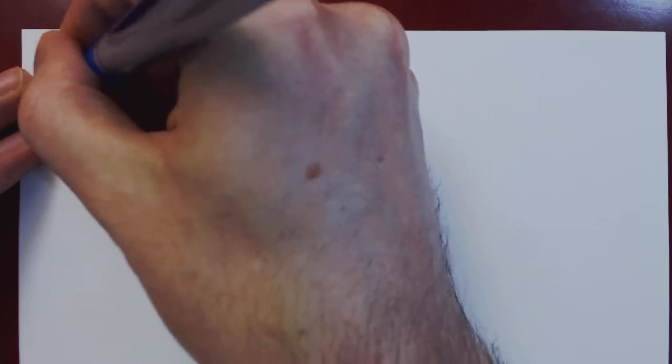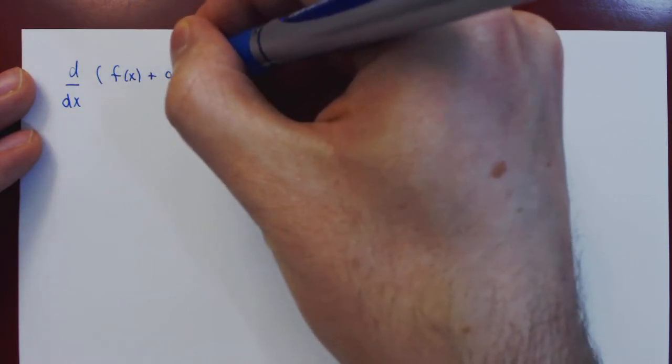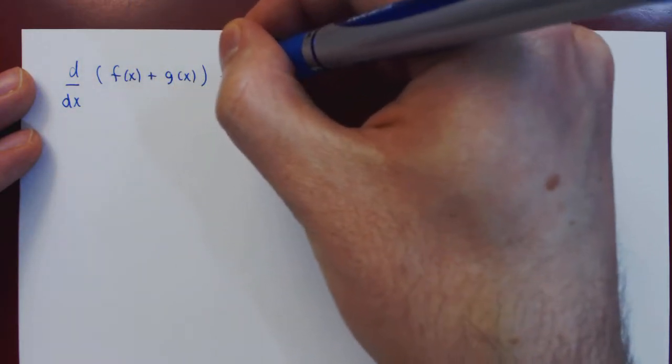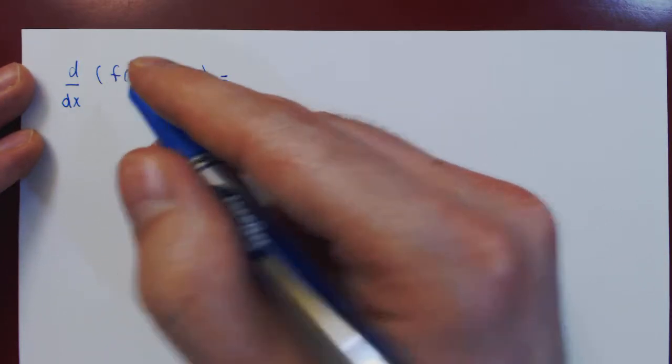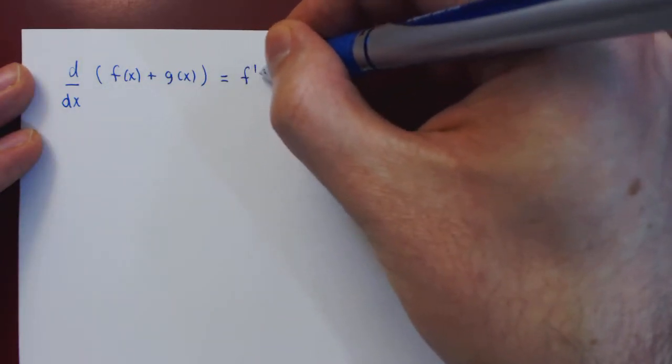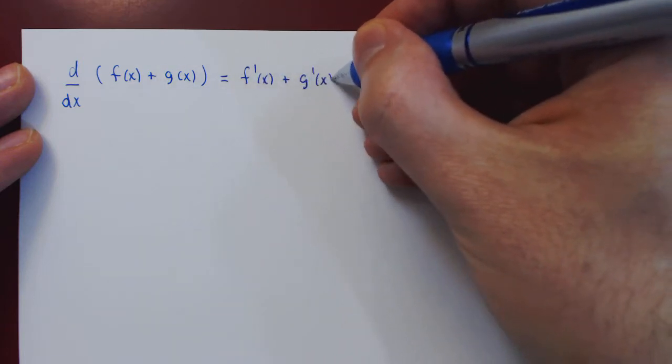And the answer is yes, and the result is remarkably simple. So what is the derivative of the sum of two functions? f of x plus g of x, and it is simply the sum of the respective derivatives. So the derivative of f at x plus the derivative of g at x.